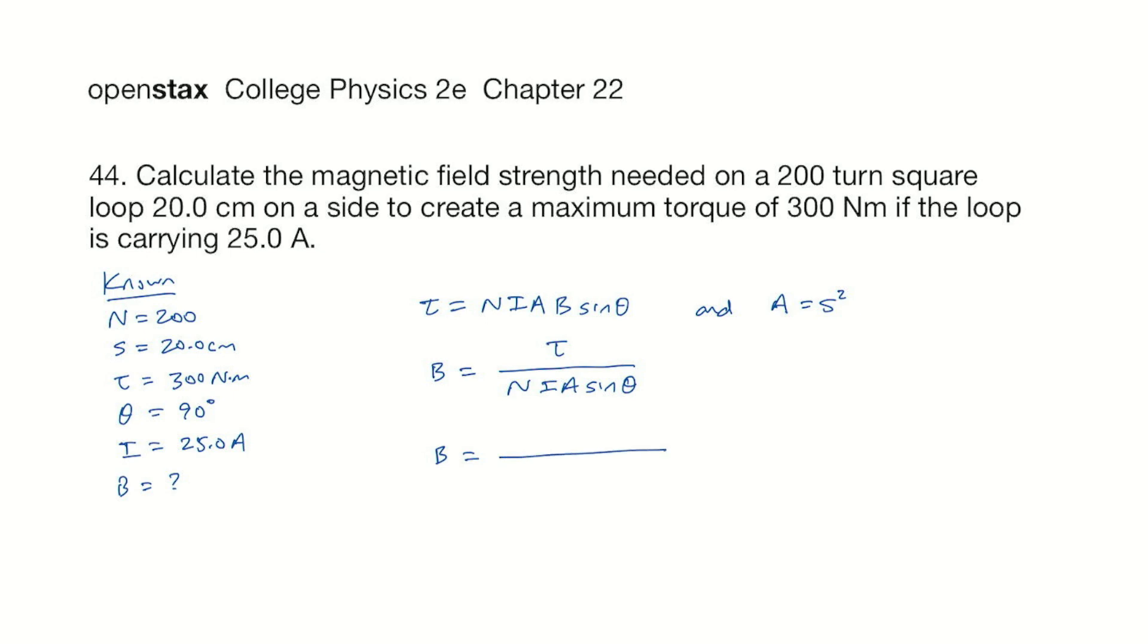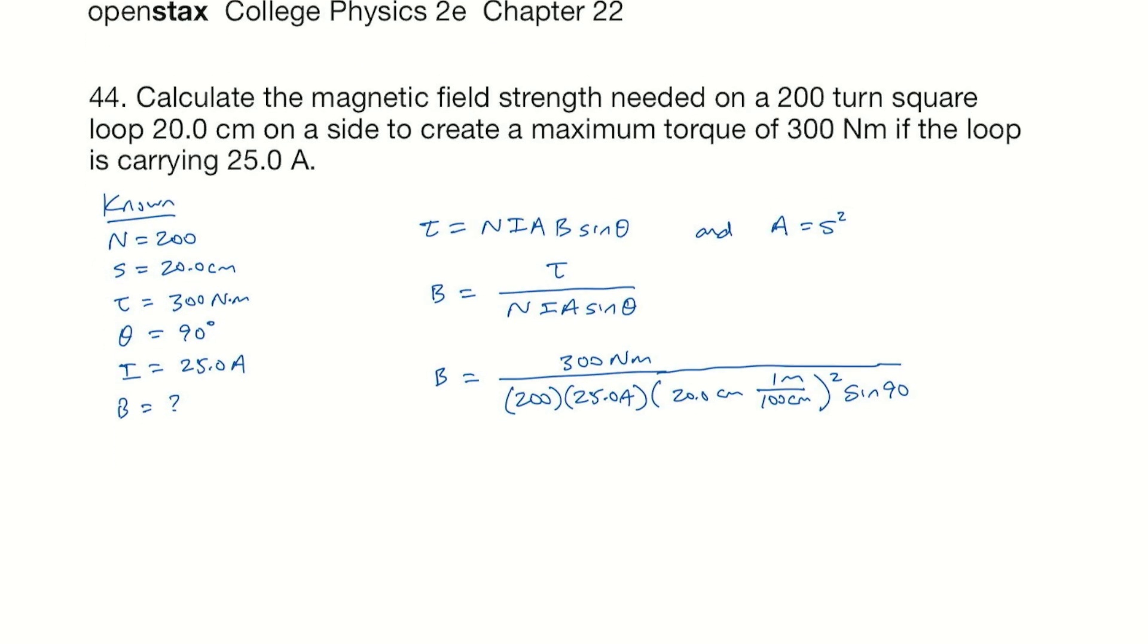So let's go straight for the numbers. Torque is 300 newton meters. Number of turns is 200. Current is 25 amps. We'll use S squared for A. We've got 20 centimeters. We need to convert that. One meter is 100 centimeters. We need to square all of that. And then we have the sine of 90, which is just going to be 1. I did that calculation, and it gave a magnetic field of 1.50 Teslas.